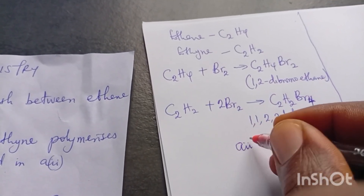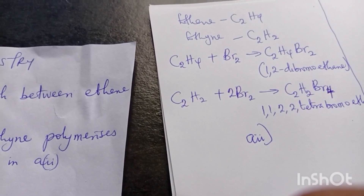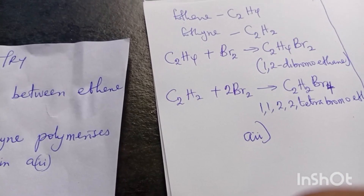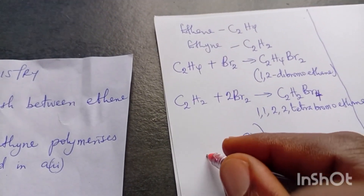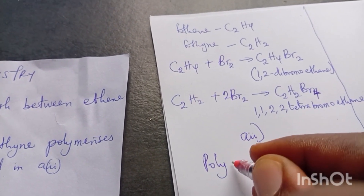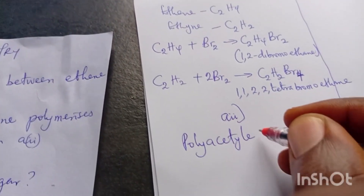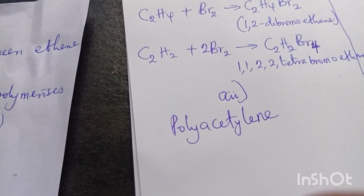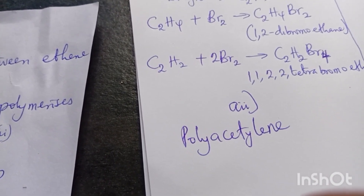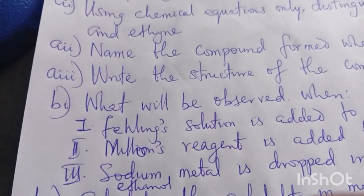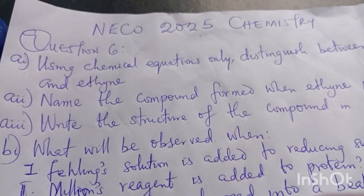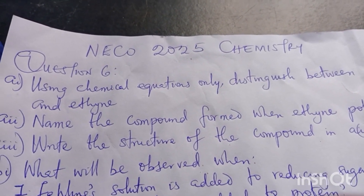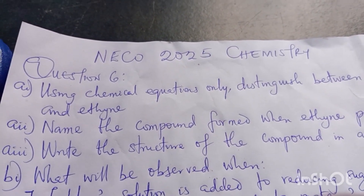They say you should name the compound formed when ethyne polymerizes — that is, the polymerization product of ethyne. That one is very simple: the answer is polyacetylene. They also say you should draw the structure of polyacetylene, which you will see on your screen.